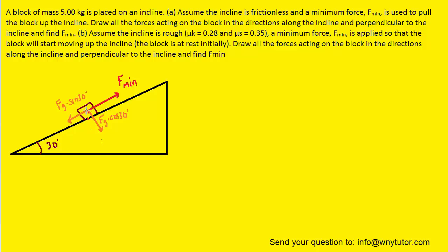There is one more force. The block is pressing against the ramp, and in response the ramp presses back against the block. This is known as the normal force Fn, and it points perpendicular to the surface of the incline. These are the four forces that Part A of the question asks for.